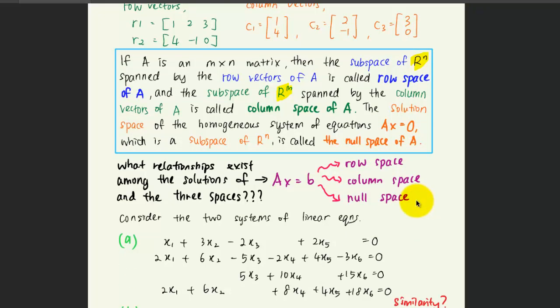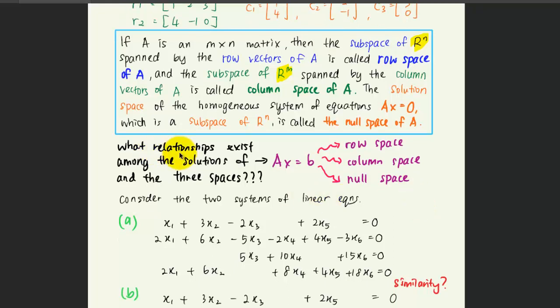And now the question that we need to ponder is, what are the relationships that exist among the solutions of Ax equals b and the three spaces mentioned here: the row space, column space, and the null space?